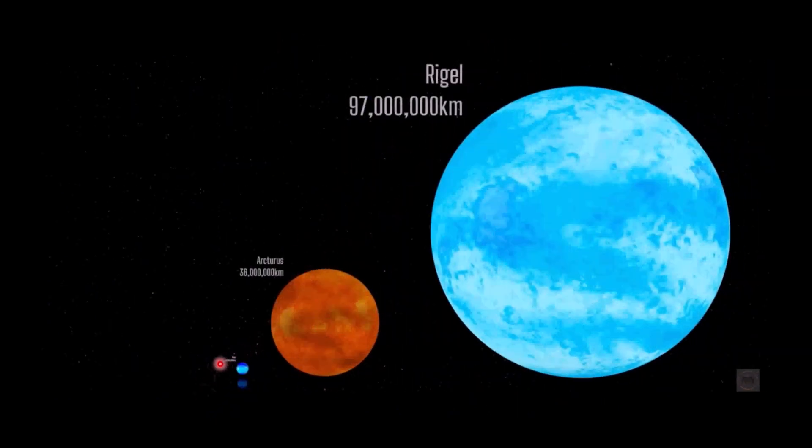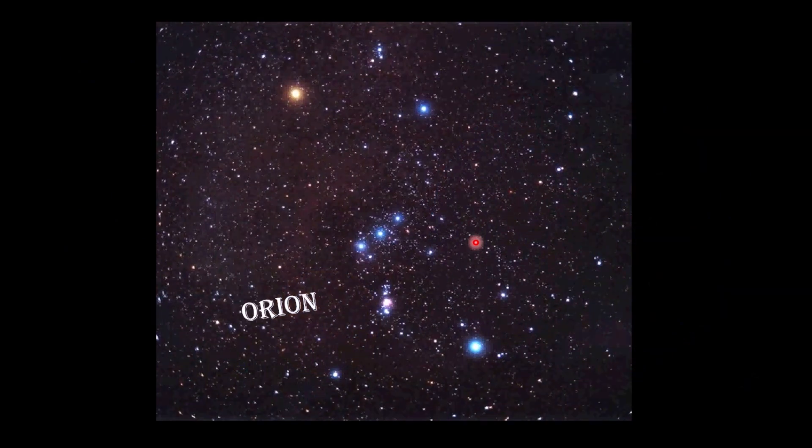Think of it backwards. Think about where the sun, how big the sun would be over here in our little scale here. The sun's a speck. A speck to Rigel. Absolutely incredible on how big Rigel is.